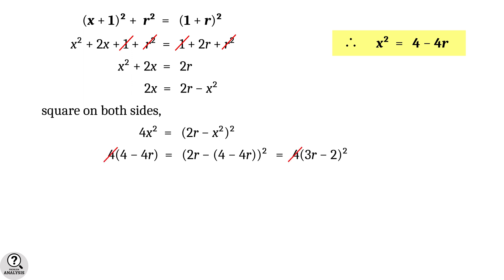Cancel 4 and that gives 4 minus 4R equal to 9R square minus 12R plus 4. Again cancel 4. And finally this equation simplifies to 8R equal to 9R square. But here R is radius which is non-zero and positive. So, we can cancel 1R from both sides of the equation.